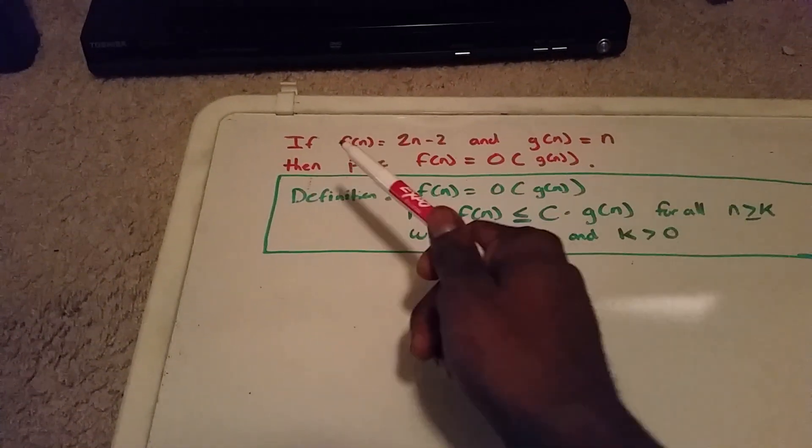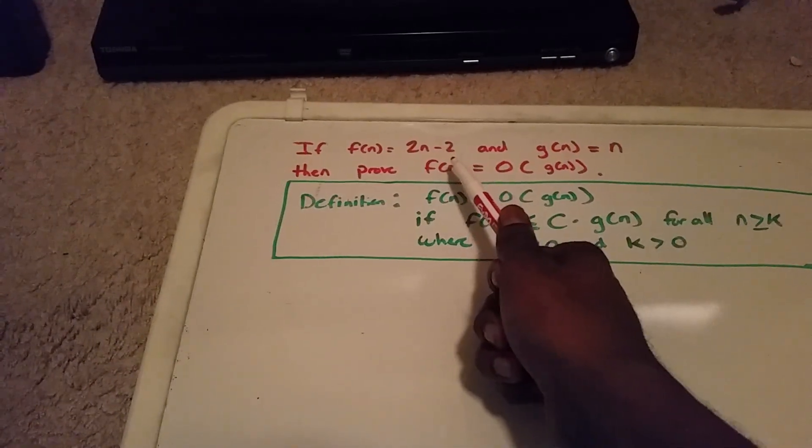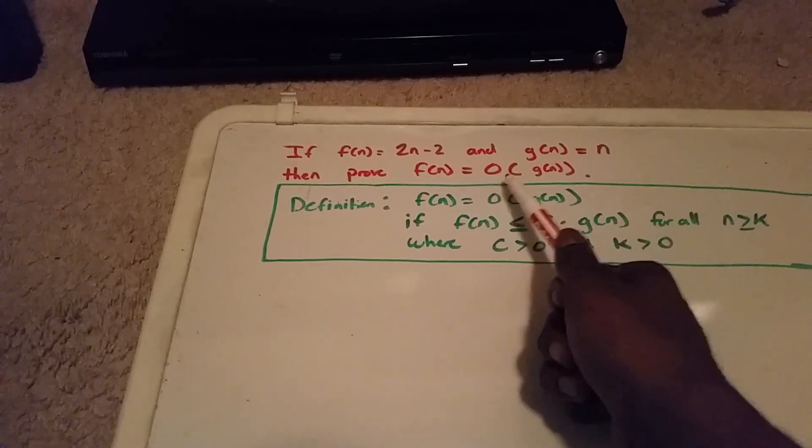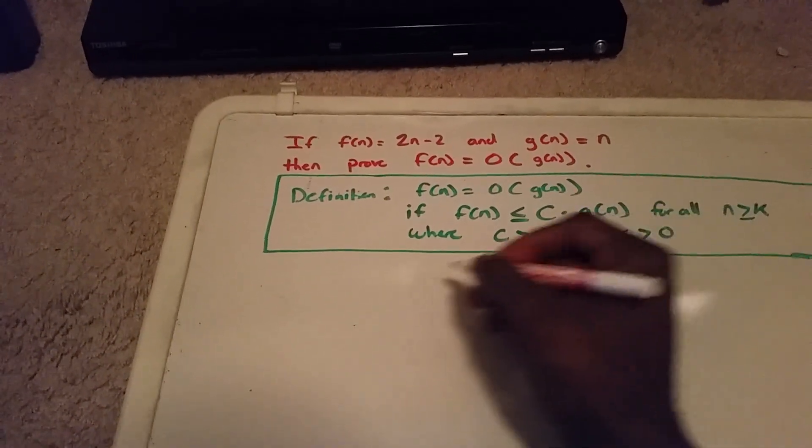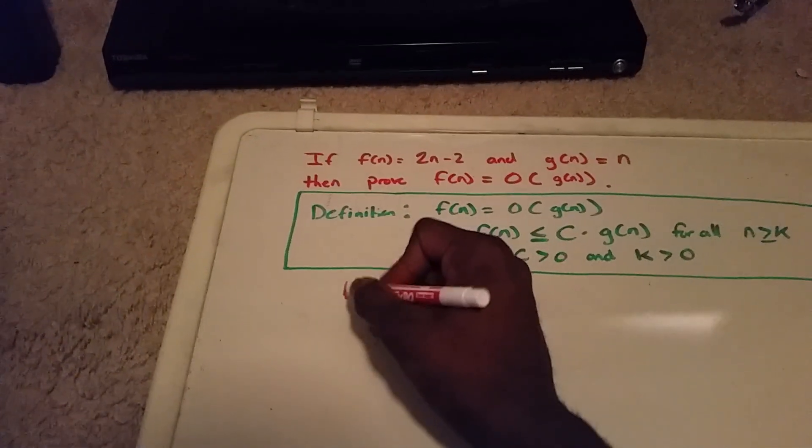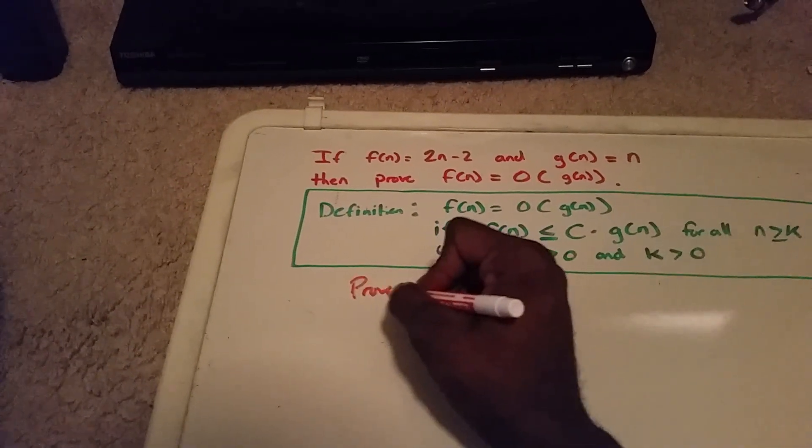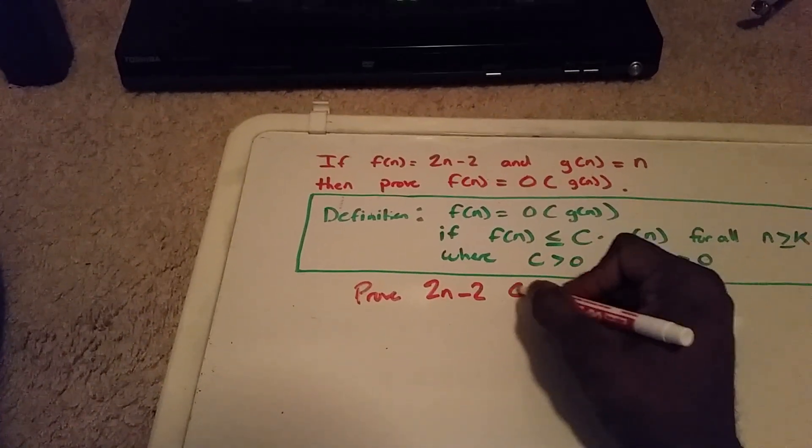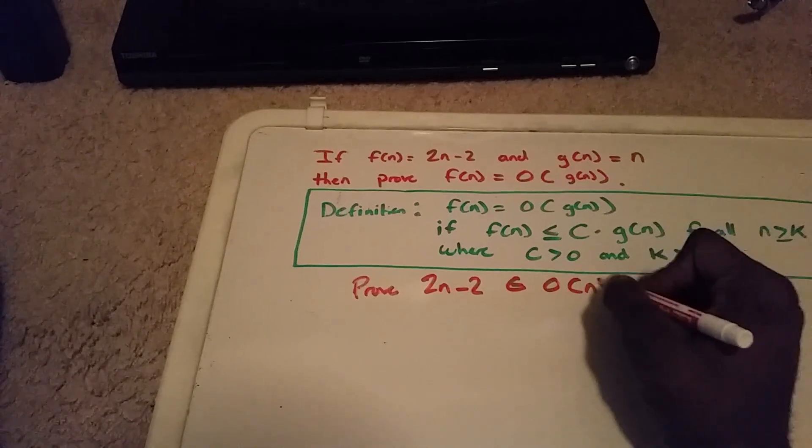If f(n) equals 2n minus 2 and g(n) equals n, we want to prove that f(n) belongs to O(g(n)). That is to say, we want to prove that 2n minus 2 belongs to big O of n.